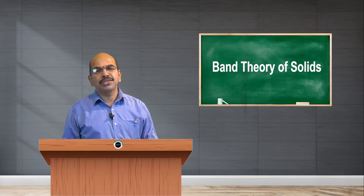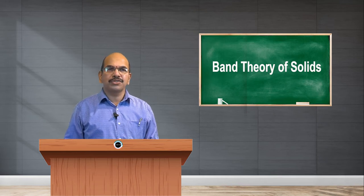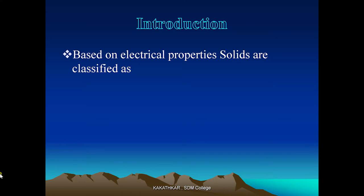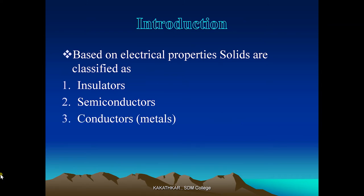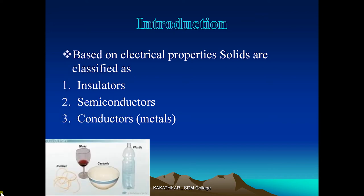Let us have an introduction. Based on the electrical properties, all of us know that solids are classified into three categories: namely insulators, semiconductors, and conductors. Conductors are materials which allow electrical current to pass through, insulators are materials which do not allow electric current to pass through, and semiconductors have an electrical property lying in between those of insulators and conductors.